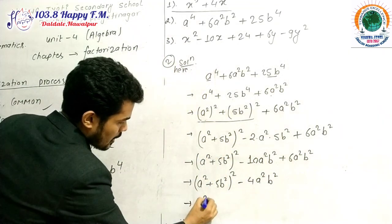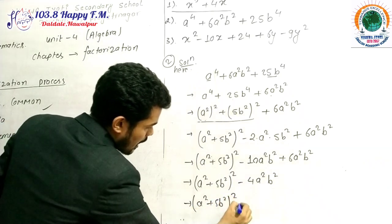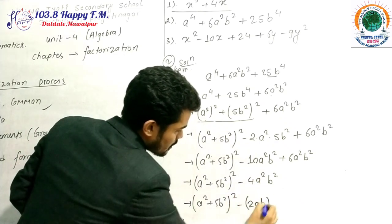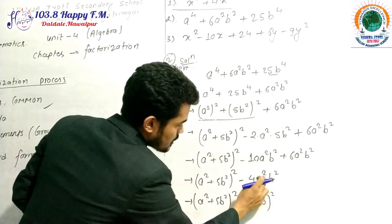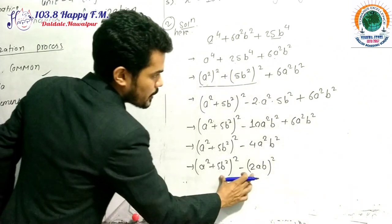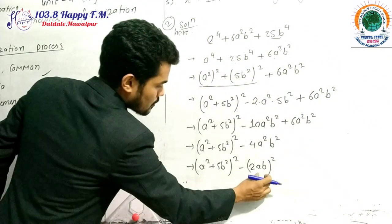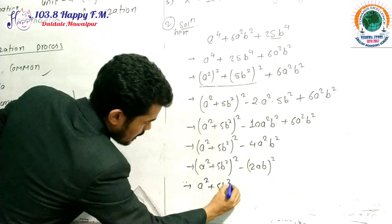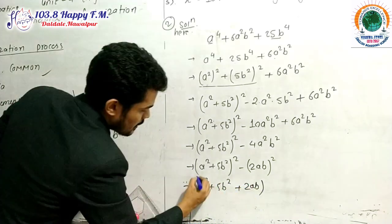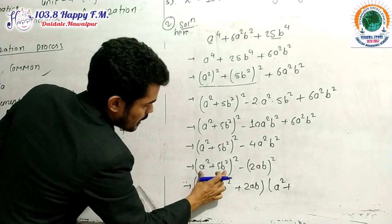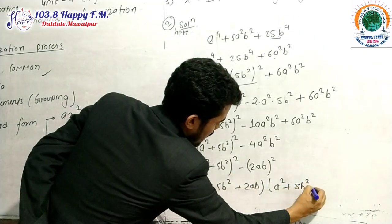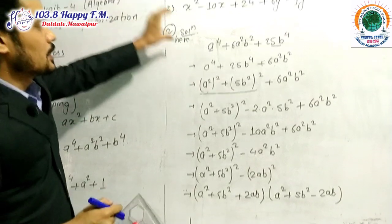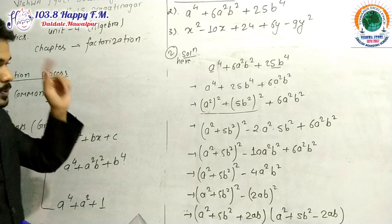Now, 4A²B² can be written as (2AB)² — since 4 is the square of 2, A² is A², and B² is B². So this becomes (A² + 5B²)² − (2AB)², which is in the form A² − B². Using A² − B² = (A + B)(A − B), we get (A² + 5B² + 2AB)(A² + 5B² − 2AB). This completes the factorization of example 2 using the standard form approach, as also discussed in the previous video.